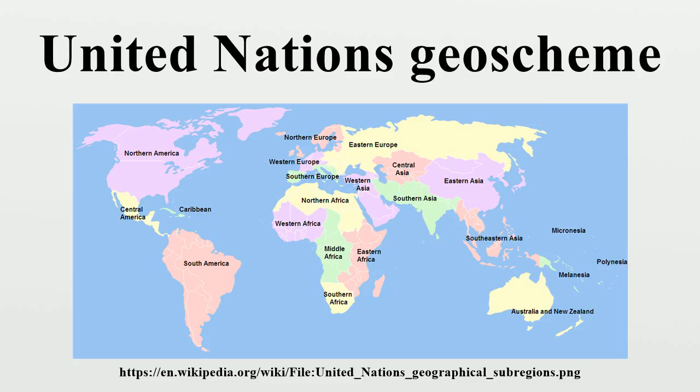Oceania — see also UNGO Scheme for Oceania. Sub-regions: Australia and New Zealand, Melanesia, Micronesia, and Polynesia.